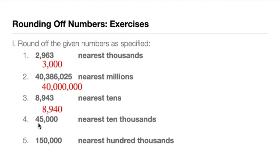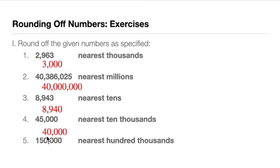For number 4: 45,000 rounded to the nearest ten thousands. The ten thousands digit is 4, and to the right of it is 5 — and notice this is exactly 5, with no digit after it. So we apply the banker's rule and ask if 4 is even or odd. Since 4 is even, we retain it. The answer is 40,000.